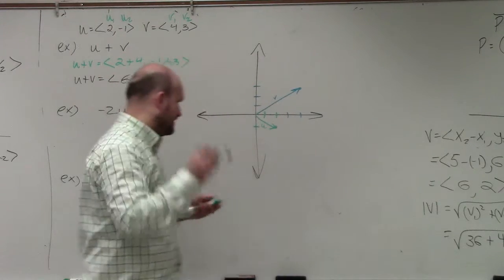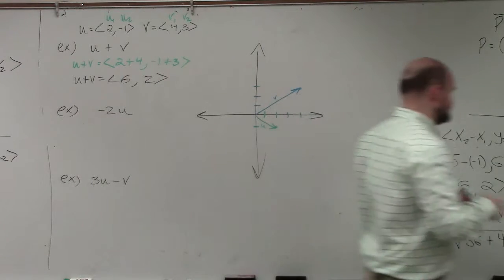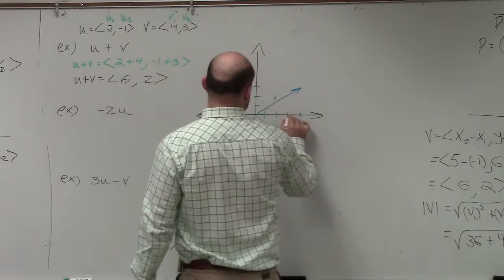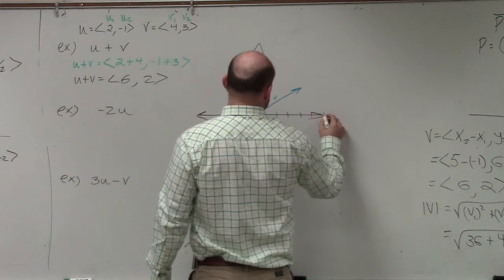So then, let's use the resultant vector in red. And that's going to be u plus v, which is 6 comma 2. 1, 2, 3, 4, 5, 6. 2.